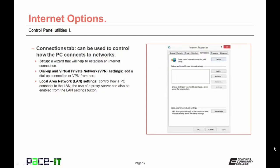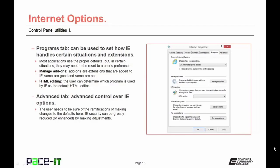The Connections tab controls how PCs connect to networks. The Setup button starts a wizard to establish an Internet connection. Under Dial-up and Virtual Private Network settings, you can add a dial-up connection or a VPN. The Local Area LAN Settings button controls how a PC connects to the LAN, and a proxy server can be enabled from here. The Programs tab sets how Internet Explorer handles certain situations and extensions, and the Manage Add-ons section allows modification of how extensions operate in Internet Explorer. The HTML default editor for viewing or editing web page code can be set here.